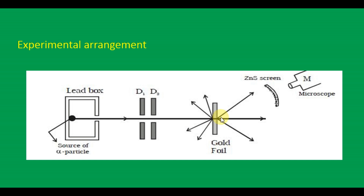The scattered alpha particles strike the fluorescent screen, which is coated with zinc sulfide. When the alpha particles are incident on the fluorescent screen, a tiny flash of light appears. These flashes can be observed with the help of a low power microscope.